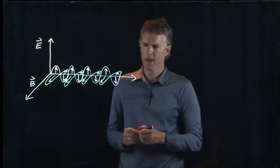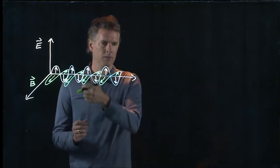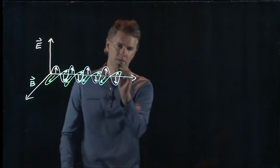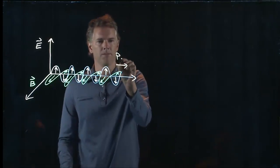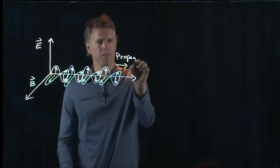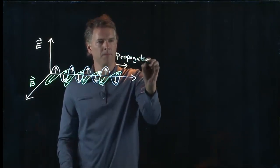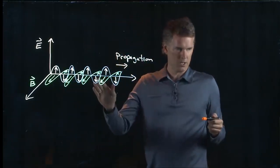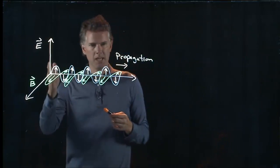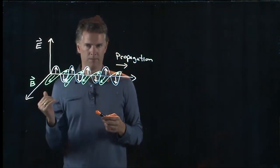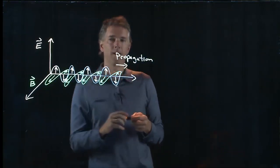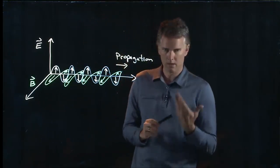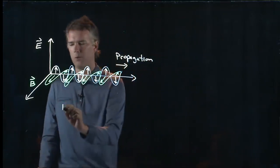And so this would be the direction of B. Now the whole wave propagates to the right. So the wave propagation direction is to the right. But there is a certain relationship between the E field and the B field.